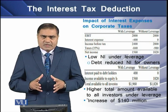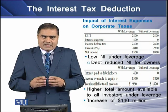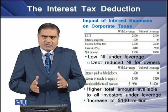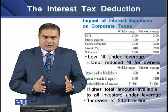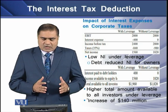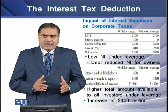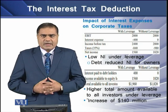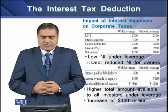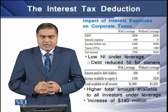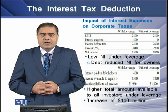This means that the net income available for the levered firm is $1,560 million, whereas for the unlevered firm it is $1,820 million.